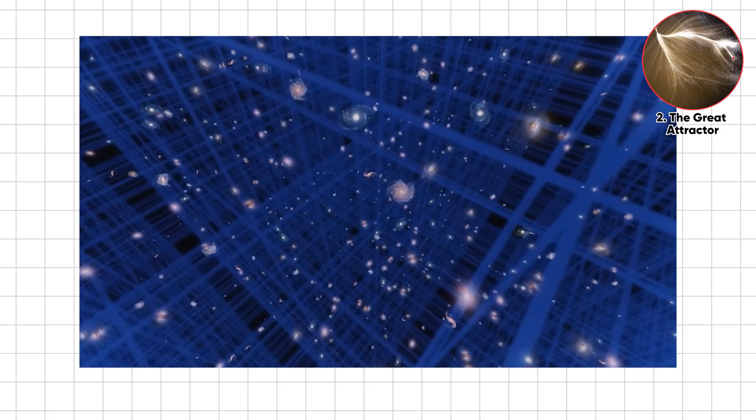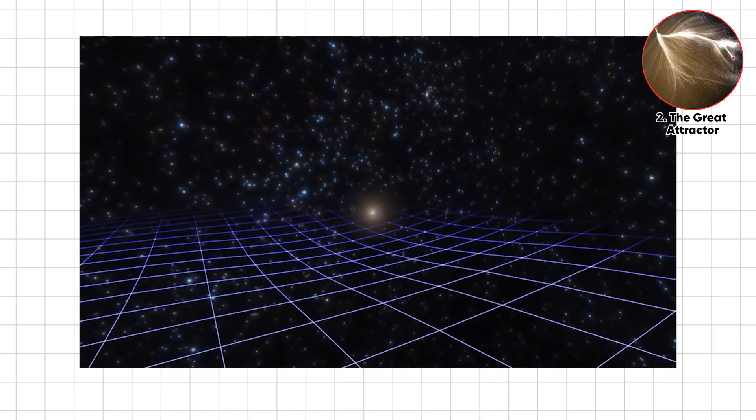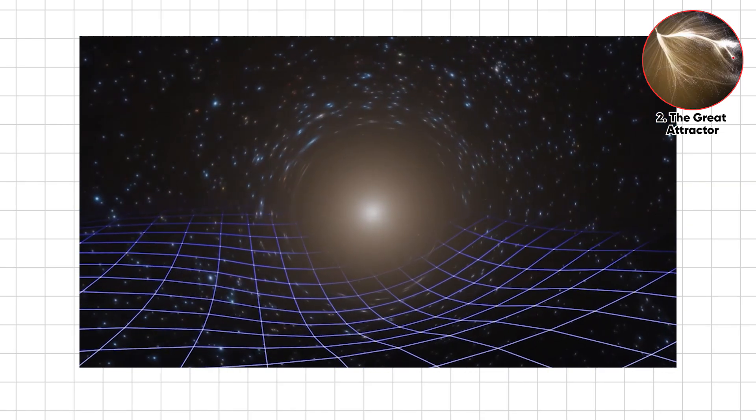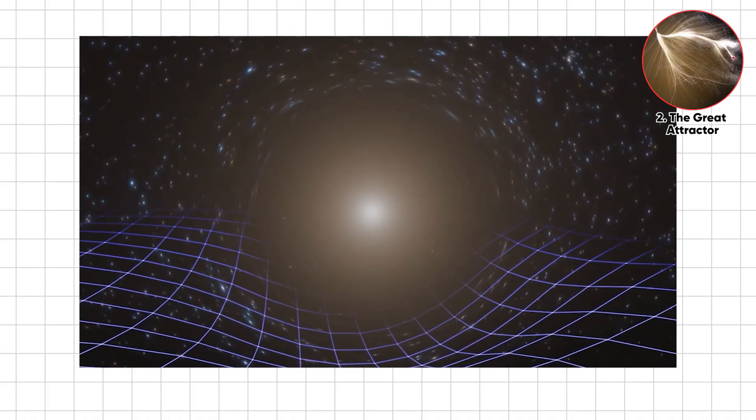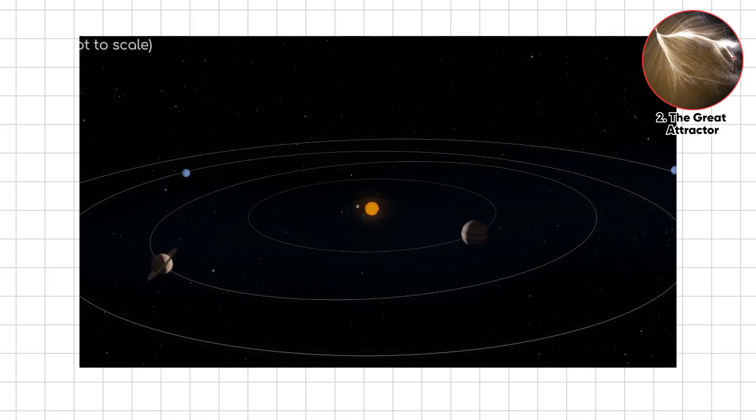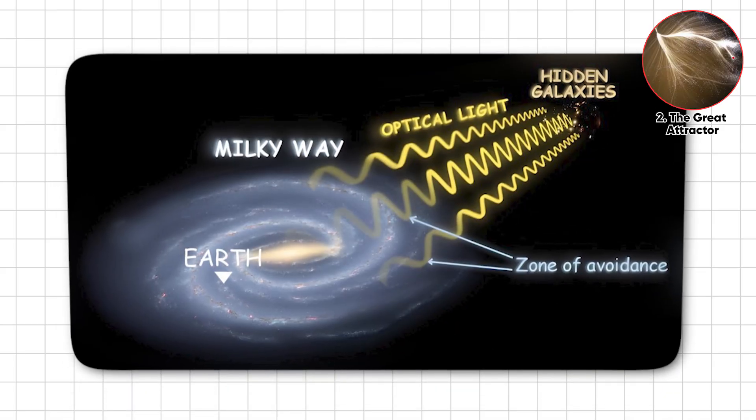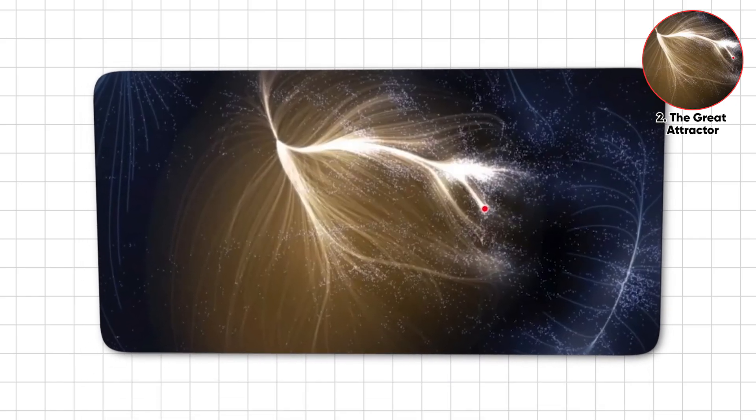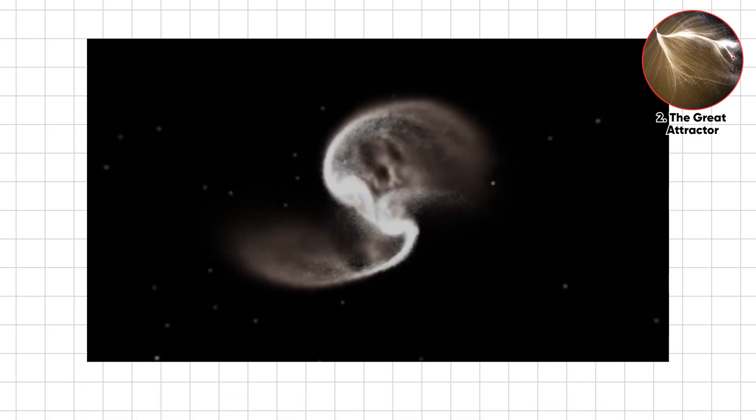The Great Attractor exerts a mysterious and terrifying gravitational pull that drags entire galactic superclusters, including our Milky Way, across the universe at hundreds of kilometers per second. Hidden behind a dense curtain in the zone of avoidance, this unseen force defies direct observation, yet its influence is undeniable.